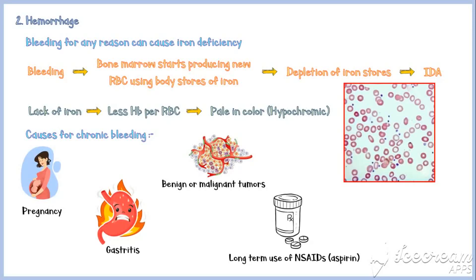Additional causes of chronic bleeding include gastritis and inflammatory conditions like Crohn's disease. There are many more causes for chronic bleeding other than these. It is suggested to find the causes associated with certain body systems and make a list so that you will not miss anything.